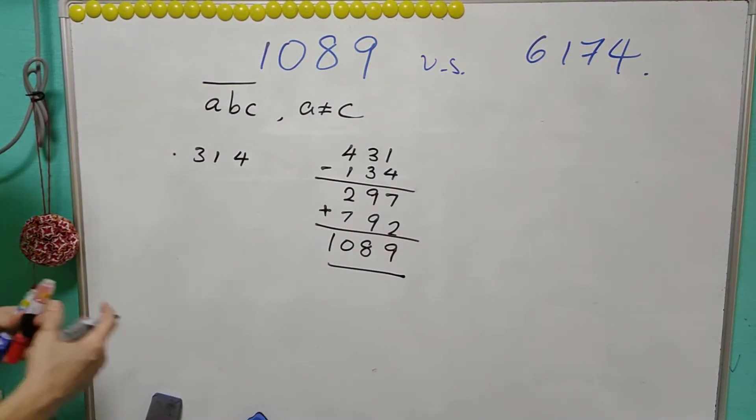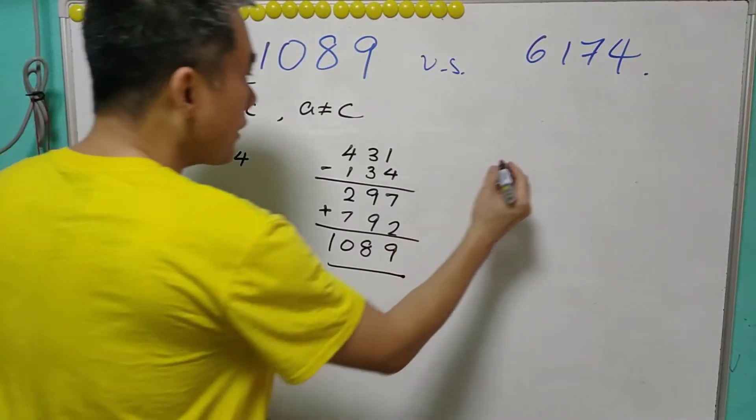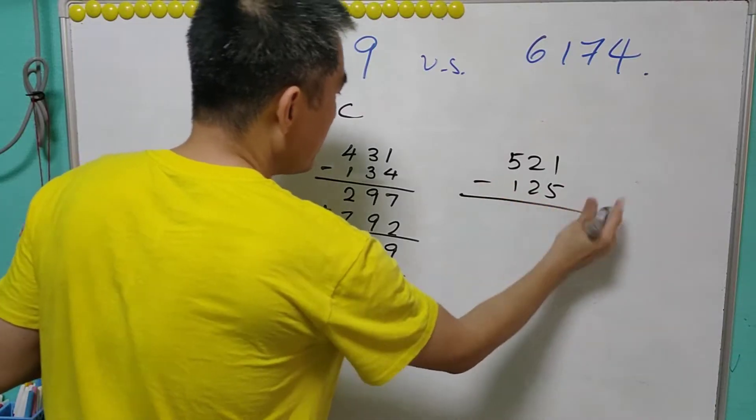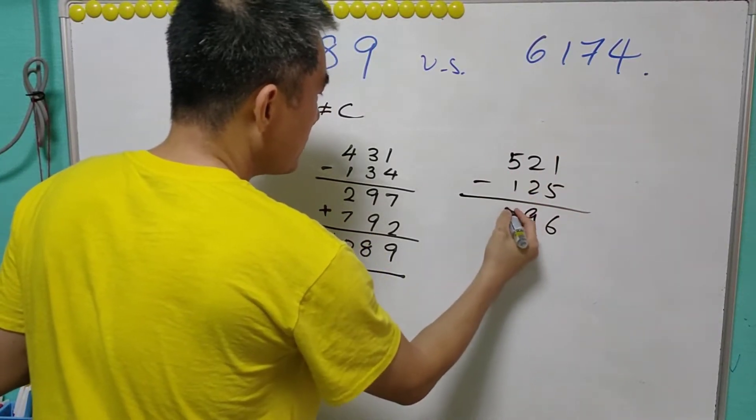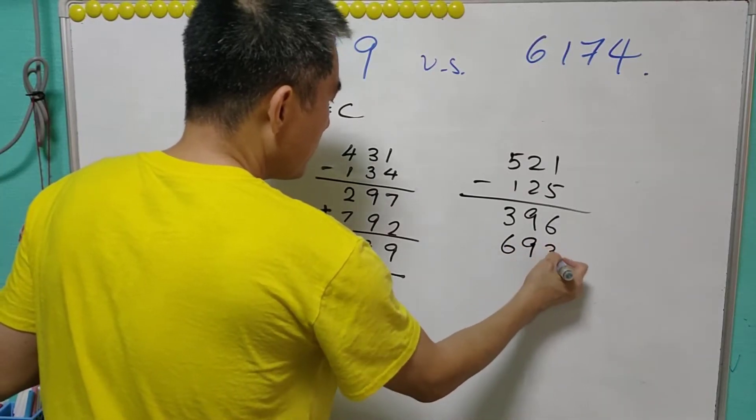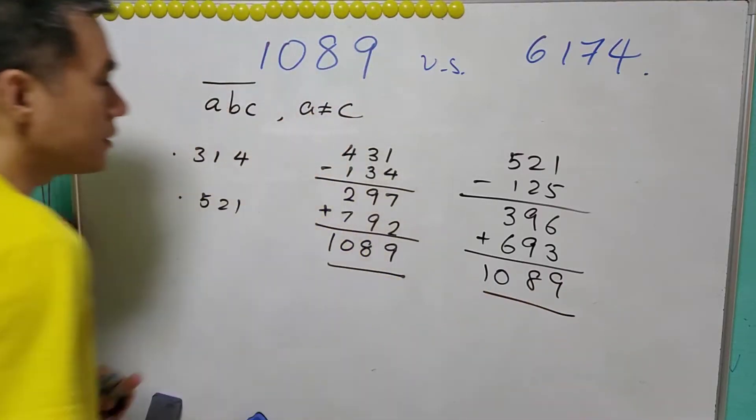You may try for any other three numbers, let's say 521. So 521 becomes the largest: 521, smallest: 125. Then this will be 396. After that, 693 plus 396, we add up again: 1089.